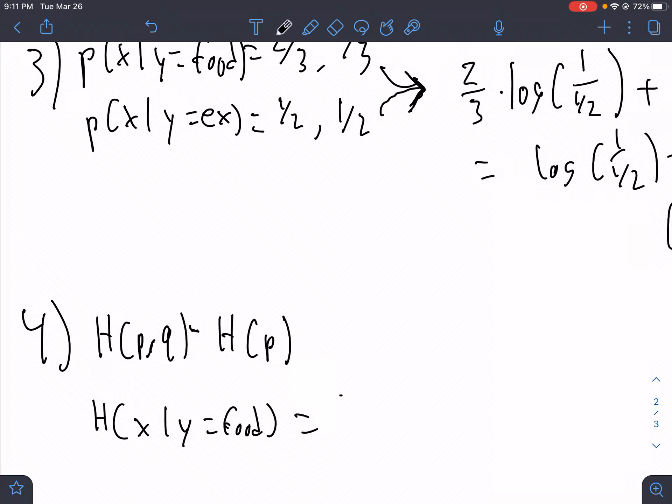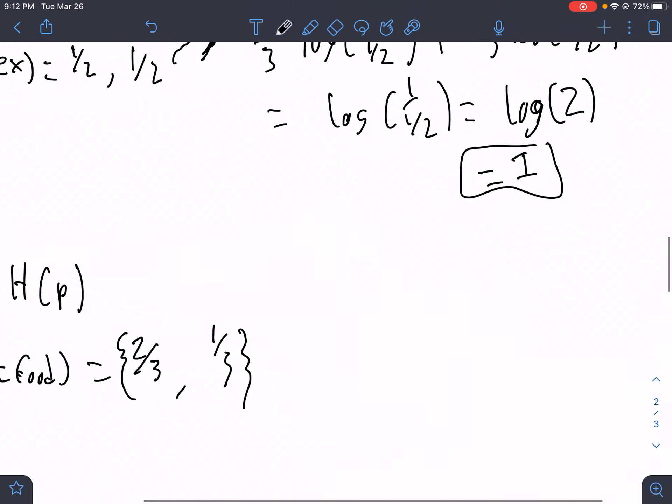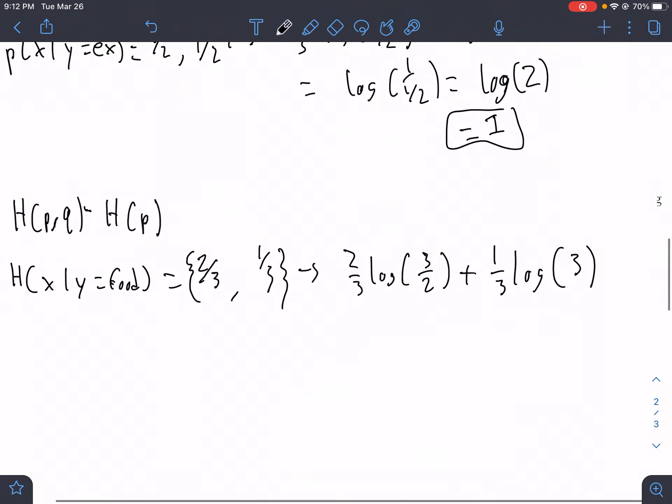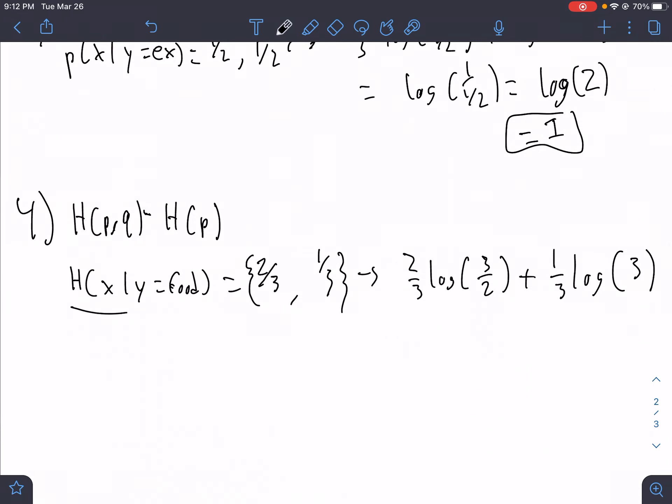And that is equal to a distribution of two-thirds, one-thirds. That's the distribution. So then the entropy of that, we apply our formula. So we have our sum. Actually, I'm not even going to write the formula out. We just have two-thirds log of one over two-thirds. So that's actually log three over two plus one-third log one over one over three. So that's just log three. So that is our H of P.